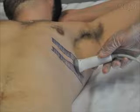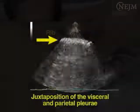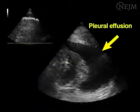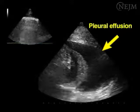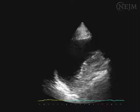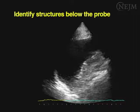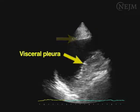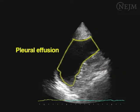Position the ultrasound probe in parallel to the intercostal space. Hold the probe firmly and perpendicular to the chest wall to obtain the best acoustic window. Normally, the visceral and parietal pleura are juxtaposed and moving with the respiratory cycle. The pleural effusion is shown as an anechoic space between the two pleura. You should be able to identify the structures below the probe — from surface to depth: the skin, the muscles, the parietal pleura, the visceral pleura, and the lung parenchyma. The pleural effusion appears as a space between the two pleurae.